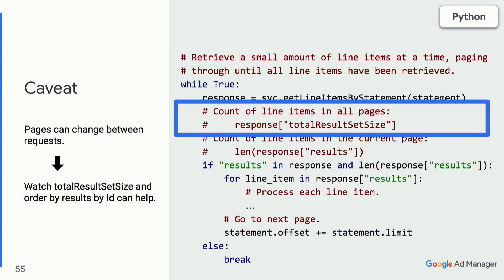It's a common pattern to get line items using getLineItemsByStatement and iterate through the results. Each request returns a page of results, but the count of line items across all pages can change if a concurrent change happens on the server. For example, suppose you're requesting 500 line items modified yesterday with a page size of 100 — expecting five pages. If a user updates one of those 500 line items while you're on page three, the next page four request will show the total result set size has reduced to 499. You can detect such concurrent updates because the total result set size will change.